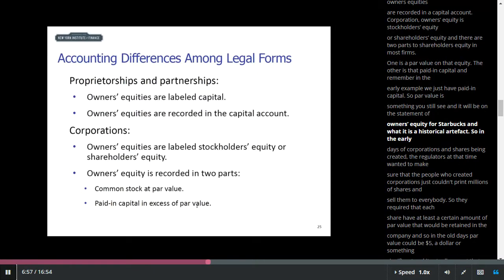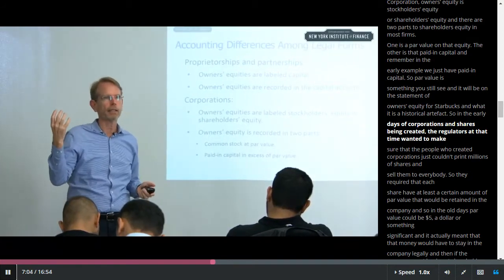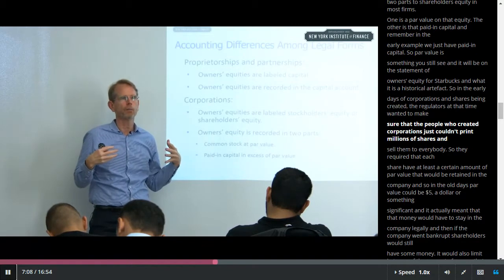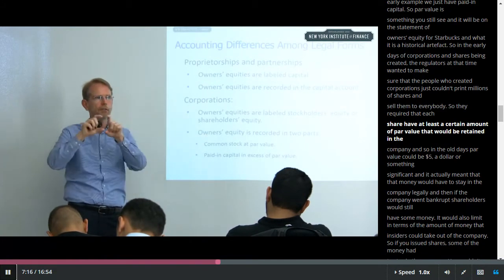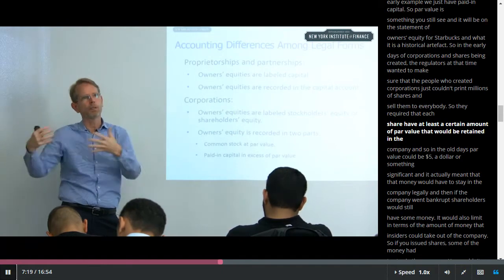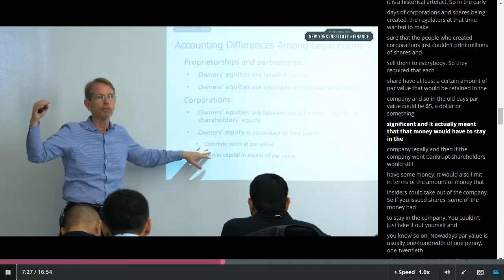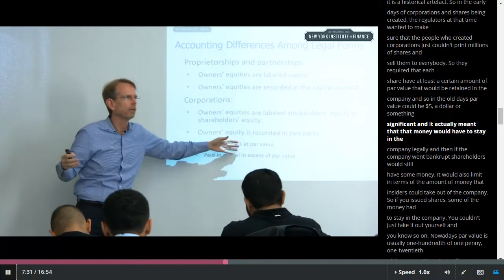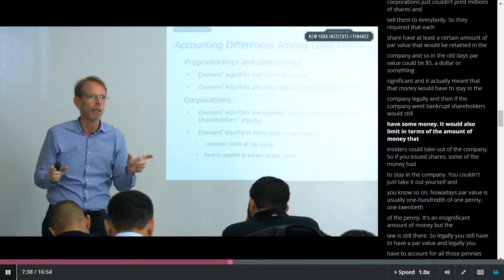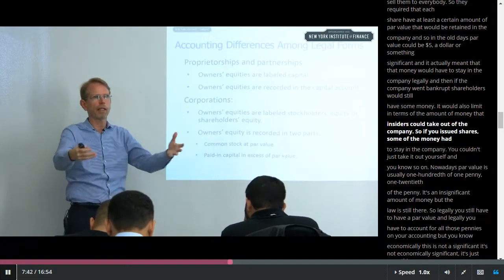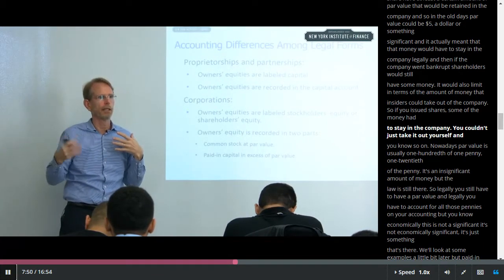In the early days of corporations, regulators wanted to make sure that the people who created corporations couldn't just print millions of shares and sell them to everybody. So they required that each share have at least a certain amount of par value that would be retained in the company. In the old days, par value could be five dollars, a dollar, or something significant — it meant that money would have to stay in the company legally, so if the company went bankrupt, shareholders could still have some money. It would also limit the amount of money that insiders could take out of the company.